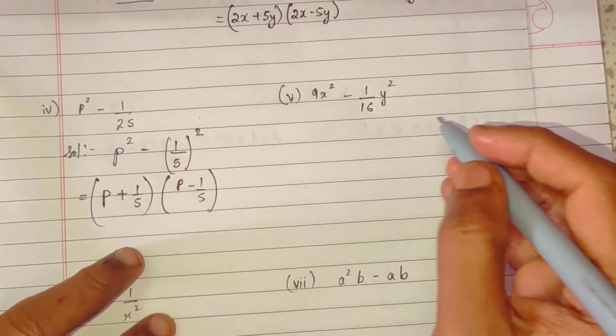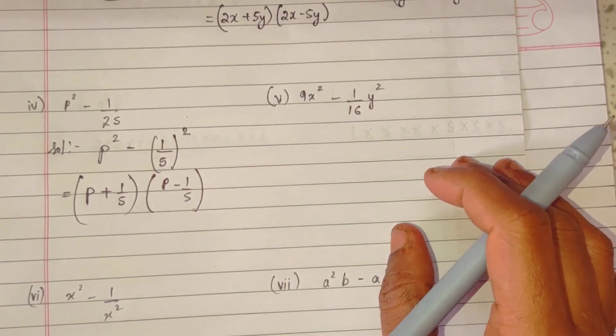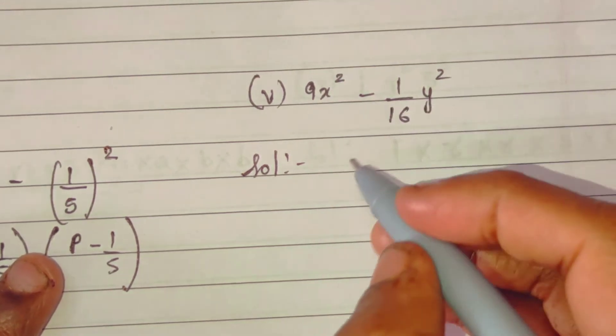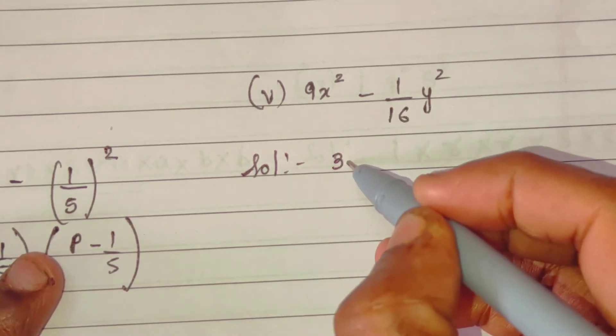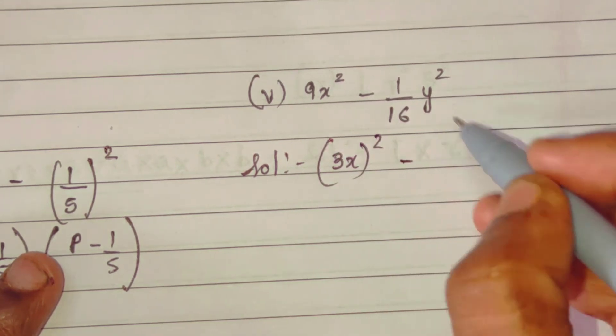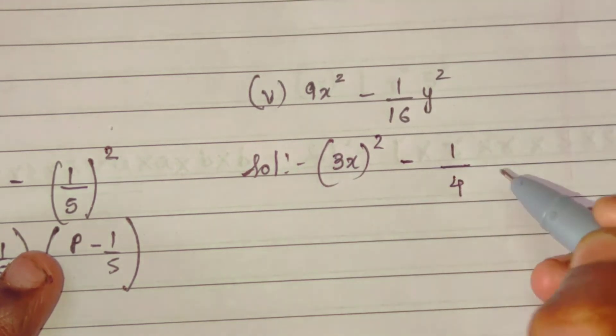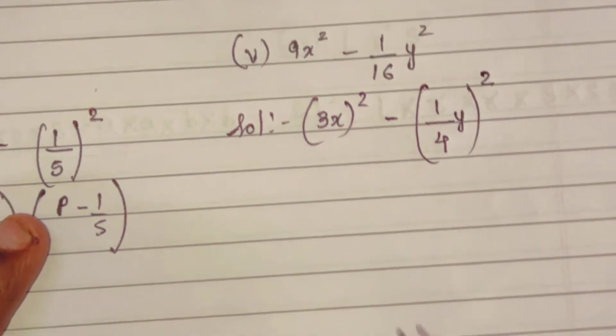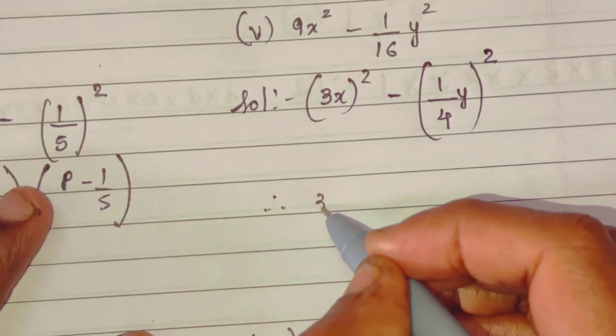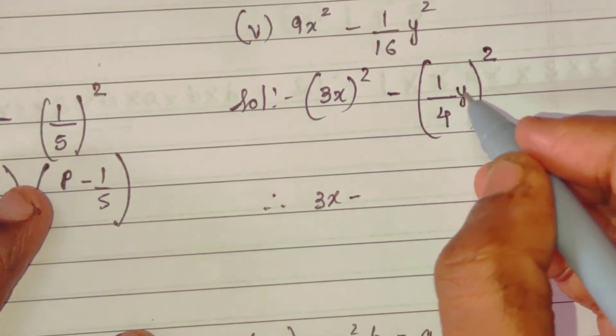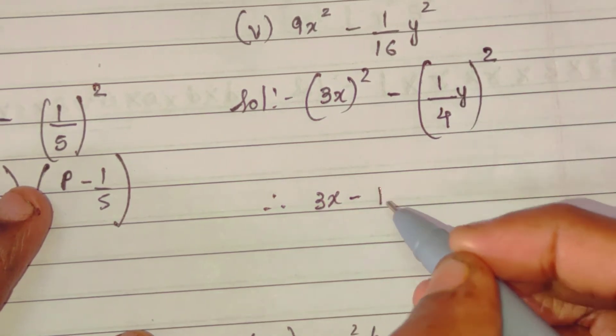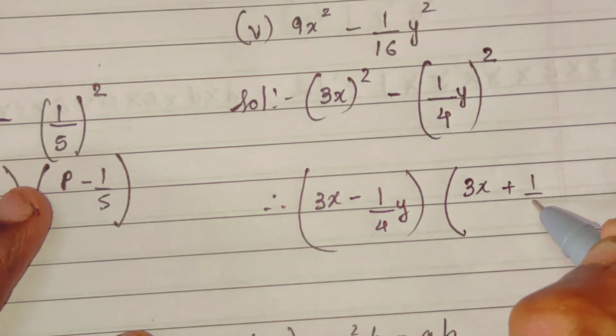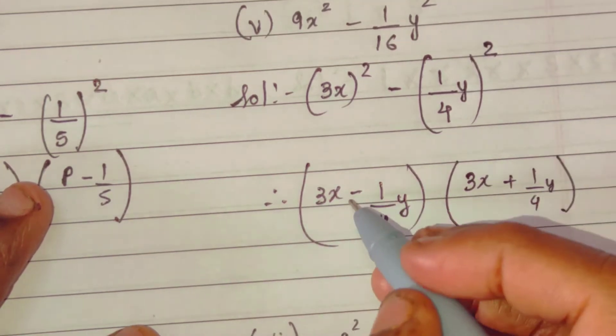Now this one. Solution. See, 9 is square of 3, so 3x the whole square minus 1 upon 16 square of 4 into y, the whole term square. So your answer will be 3x minus 1 upon 4y, and then 3x plus 1 upon 4y.